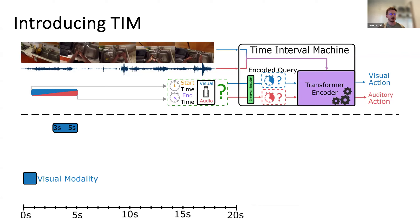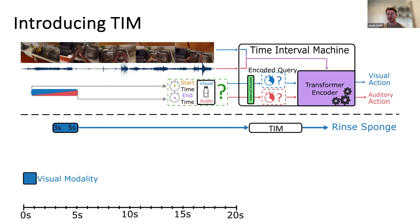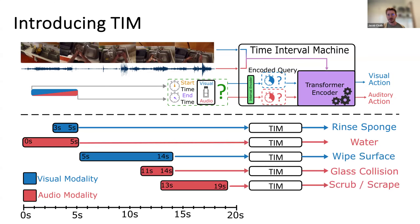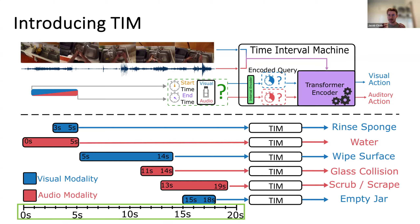For example, in a 20-second input, if we're interested in the action between 3 to 5 seconds in the visual modality, we encode this time interval, feed it to TIM, and it tells us 'rinse sponge' is happening. Within the same input, if we change the time interval query to 0-5 seconds in audio, TIM changes its output to 'water.' We can keep changing the query to whichever ground-truth timestamp we'd like, and TIM updates its prediction accordingly — using the exact same long 20-second input, just changing the query.